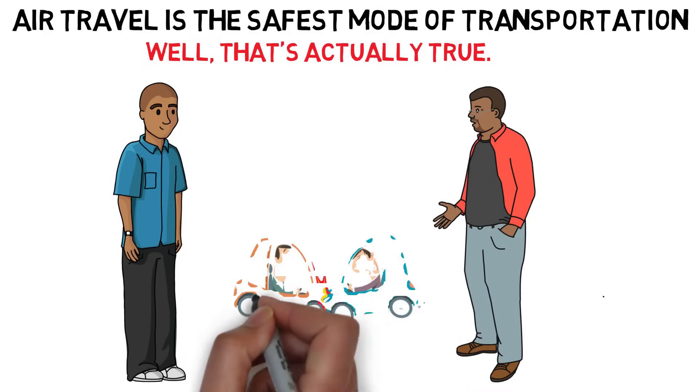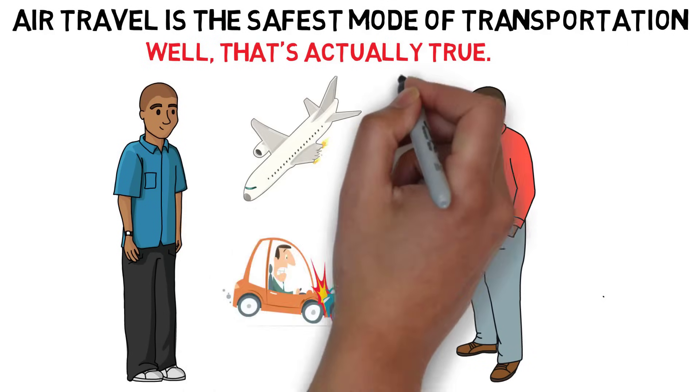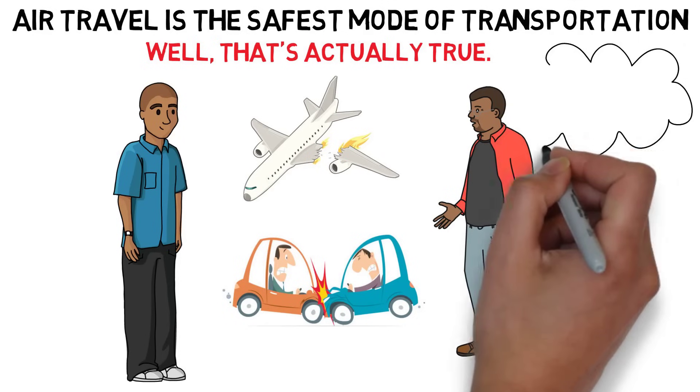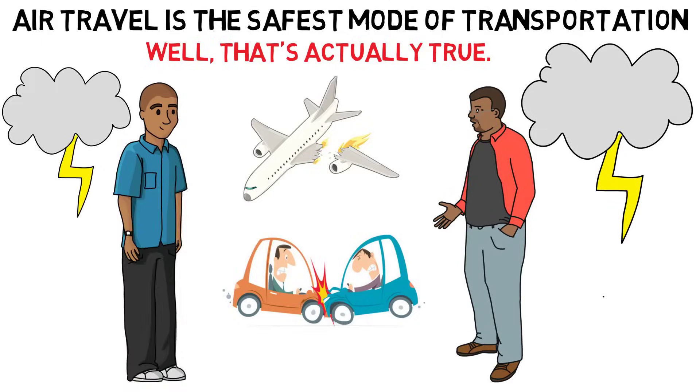According to a Harvard University study, your odds of dying in a car accident are about 1 in 5,000, and your odds of dying in a plane crash are about 1 in 11 million. In fact, you're more likely to be struck by lightning with a 1 in 13,000 chance for your lifetime.